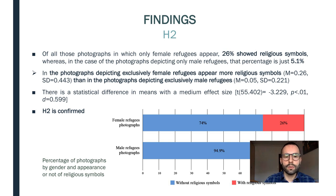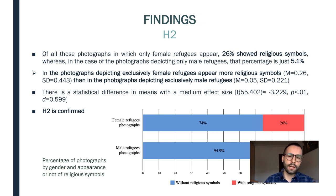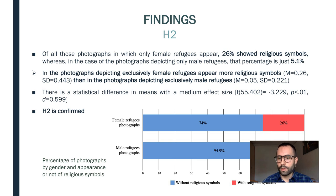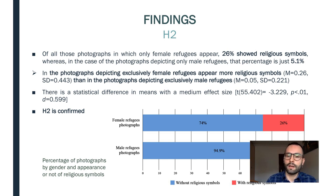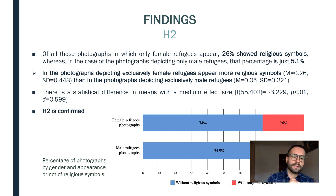Regarding hypothesis 2, we found that in photographs depicting exclusively female refugees, more religious elements appear than in photographs depicting only male refugees — 26% in the case of female refugees versus 5.1% in the case of male refugees. There is a statistically significant difference in means with a median effect size, so hypothesis 2 is also confirmed.